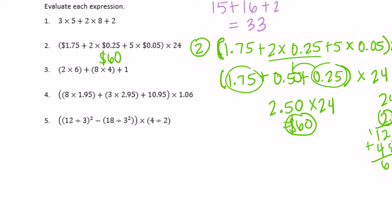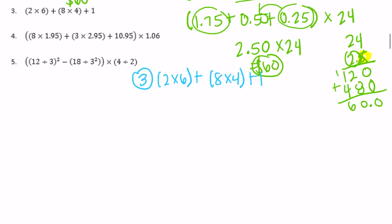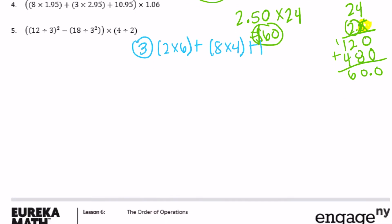Number three: we have two times six, plus eight times four, plus one. We solve things in parentheses first: two times six is twelve, plus eight times four is thirty-two, plus one. Now we add them all together: twelve plus thirty-two is forty-four, plus one is forty-five.